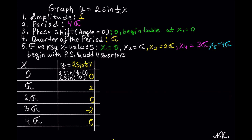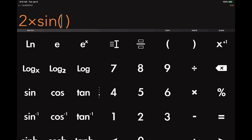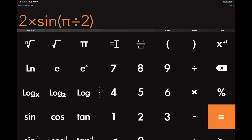The next x value is pi, so we have 2 sin of 1 half times pi. Multiplying 1 half times pi: 1 times pi over 2 times 1 gives us pi over 2. So this becomes 2 sin of pi over 2. This hits the quadrantal angle of pi over 2, or 90 degrees. So 2 times sin of pi over 2 gives us 2.